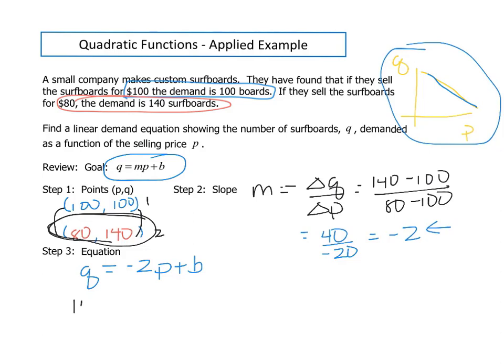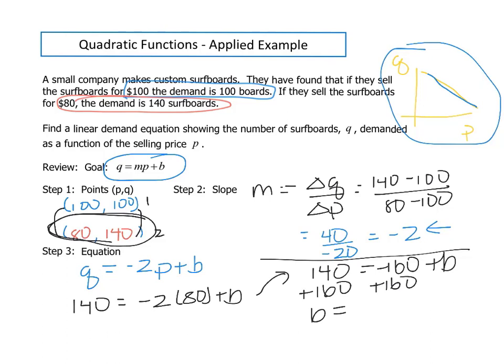Our 140 is our Q, so we're going to have 140 equals negative 2, our price is 80, so it's going to be times 80 plus B. So we're going to have 140 equals negative 160 plus B. If you add 160 to both sides, we get B equals 300.